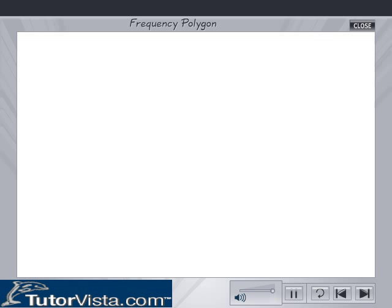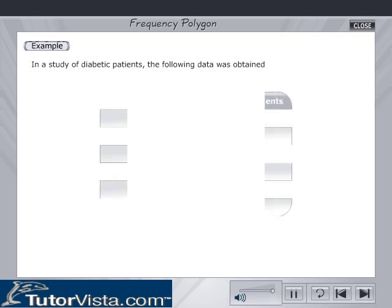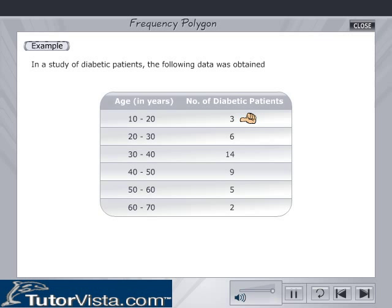Let us consider an example. In a study of diabetic patients, the following data was obtained. There are 3 diabetic patients in the age group of 10 to 20 years, 6 in the age group of 20 to 30 years, 14 in the age group of 30 to 40 years,